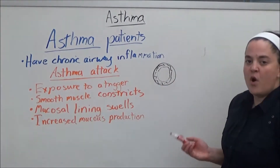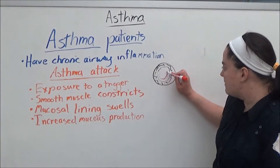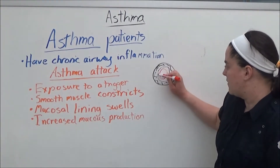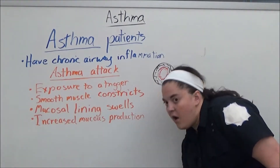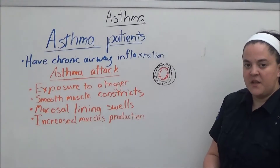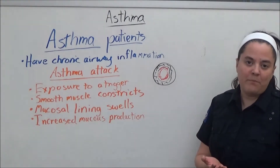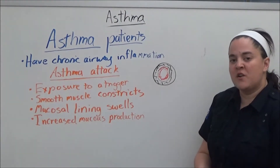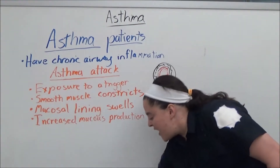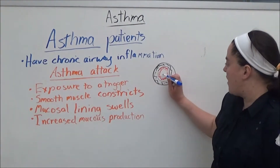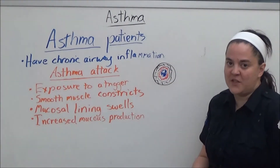The mucosal lining that lines the airways swells. Under normal circumstances, mucus sweeps debris out of the airway. However, when patients are experiencing an asthma attack, there's increased mucus production and it actually clogs the airway, causing a narrowing of the passage.